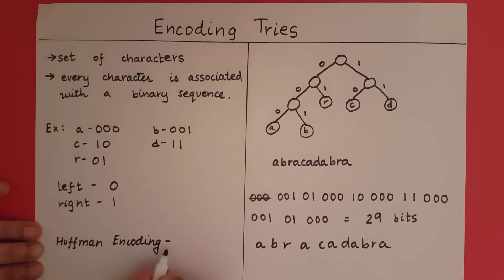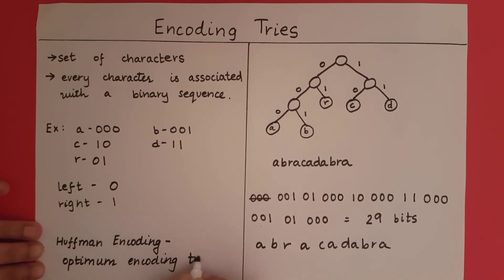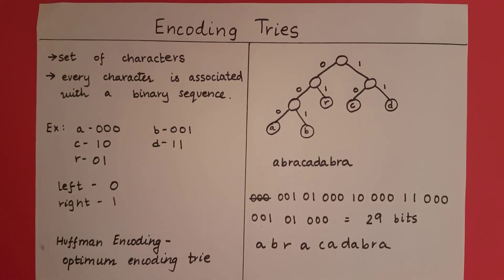So what is Huffman encoding going to do? It is going to give us the optimum encoding trie for a particular string that produces the shortest code. We will take a look at Huffman encoding in the next video.